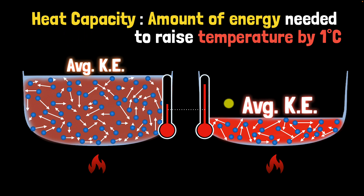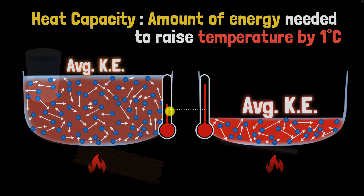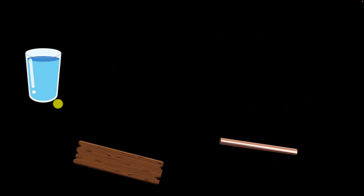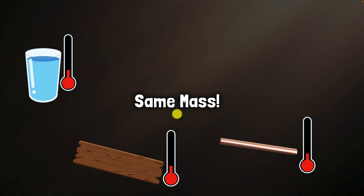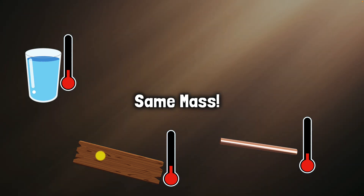Heat capacity is useful when comparing samples of the same material. But what if we compare samples of different materials? Consider a glass of water, some wood, and a copper rod — let's say they have the same mass and the same starting temperature. We're going to heat them up equally by keeping them in sunlight. Whose temperature will rise faster? It turns out copper's temperature shoots the fastest, then comes wood, and then finally water.